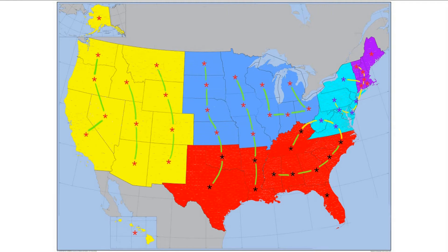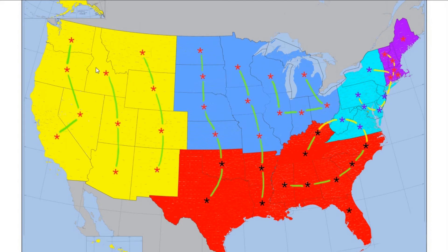Let me enlarge this. Then we got Idaho, Utah, Arizona — they form the Little Bow States. Then we got Montana, Wyoming, Colorado, New Mexico — they form the Mid Bow States. And then we got North Dakota, South Dakota, Nebraska, Kansas, Oklahoma, and Texas, and they form what I call the Spinal States or the Backbone States.